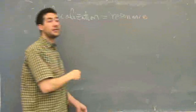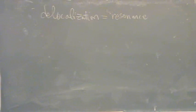If you have resonance, you have delocalization. If you are able to draw at least one resonance structure, you have delocalized electrons.